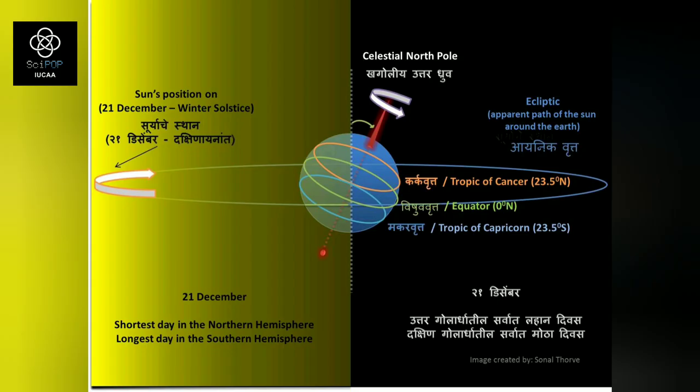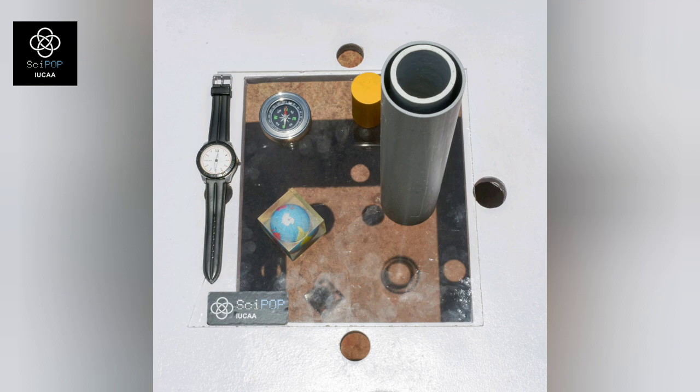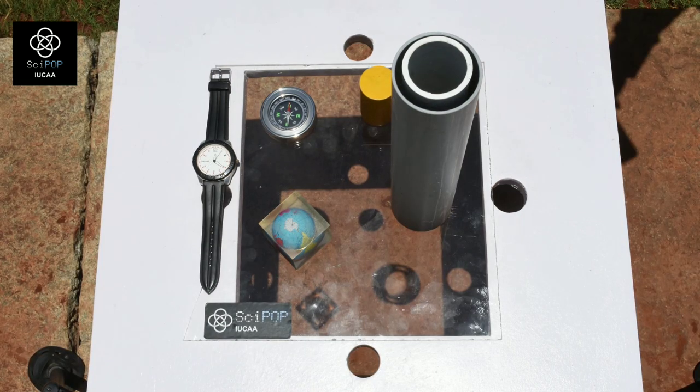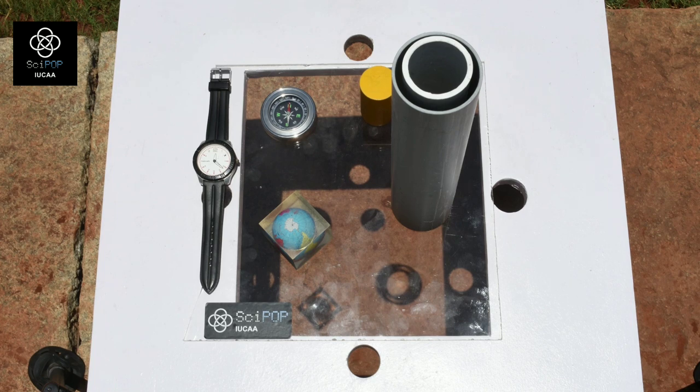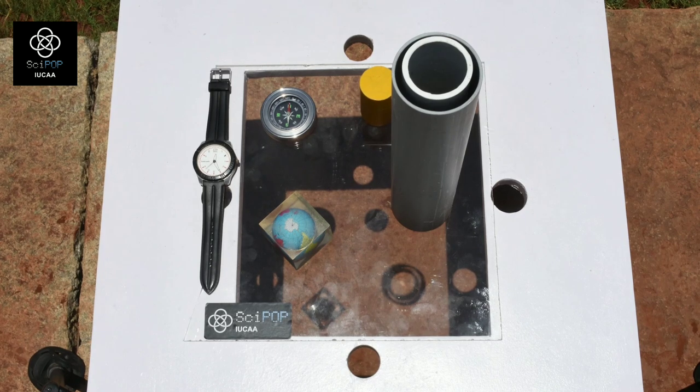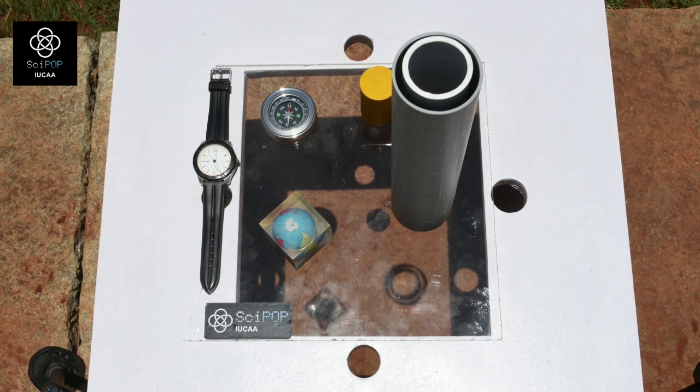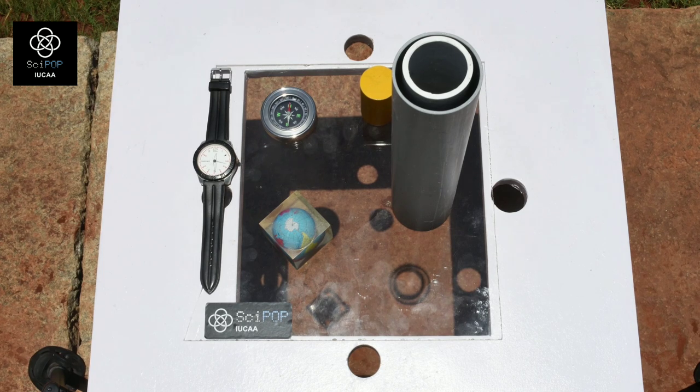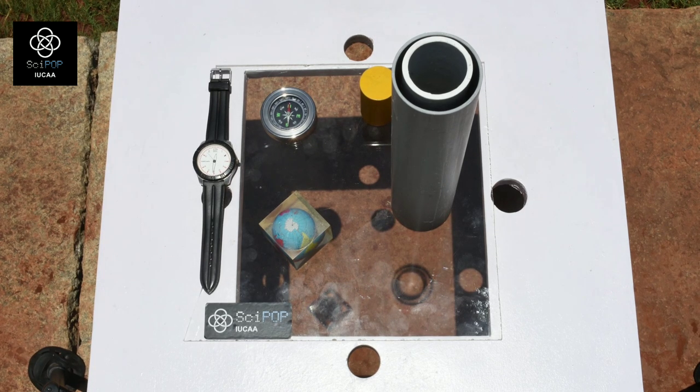In this clip, we can see shadows of a few objects kept in the sunlight. This video was made at the location 73.8 degrees east, 18.5 degrees north, Pune. We can observe the shadows becoming shorter and disappearing beneath the objects.